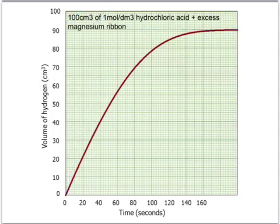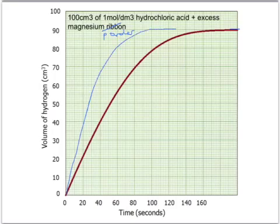What about if we weren't using magnesium ribbon but instead we were using magnesium powder? If we use magnesium powder, we increase the surface area of the solid and we should get a faster reaction. But because the amount of acid and the concentration hasn't changed, we should still get the same volume of gas produced — so the line will be steeper but it will still stop at 90 cubic centimetres.